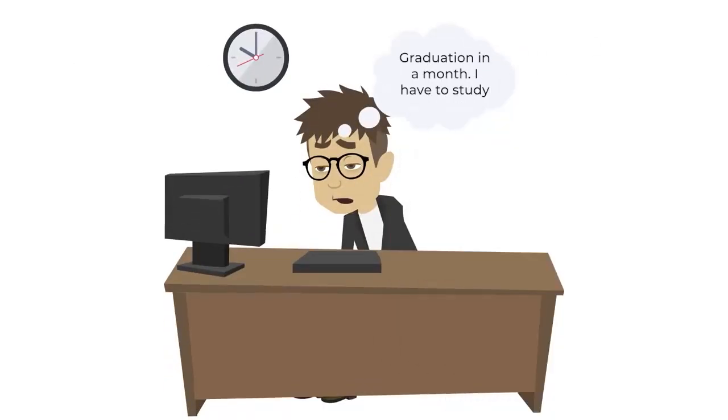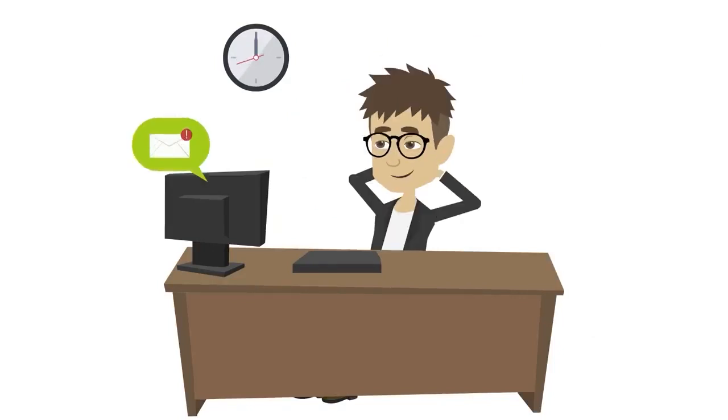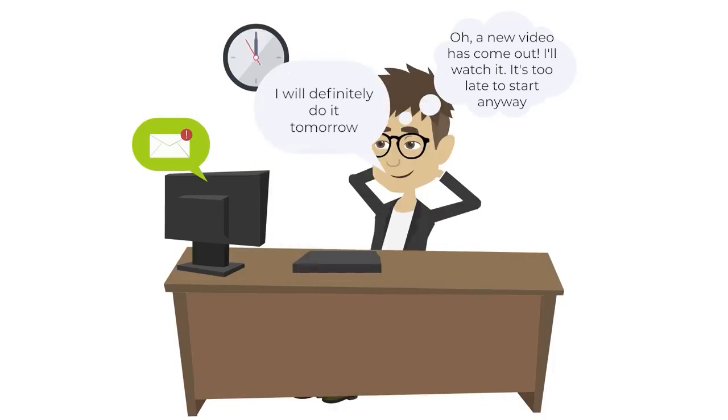Procrastination looks like that. At first, you think or look at what you need to do, and you get uncomfortable. Then you shift your thoughts or attention to a more enjoyable activity, such as watching videos. And after getting a temporary pleasure from it, two hours later you find that you haven't done anything yet. And then tell yourself that tomorrow morning you will definitely start. That is, you find a thousand reasons to postpone the lesson. And that's usually because you want to do it all at once.